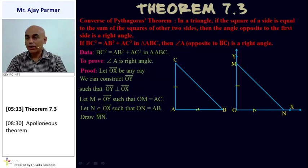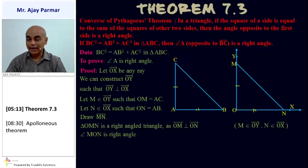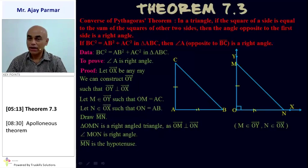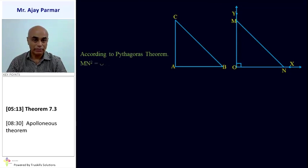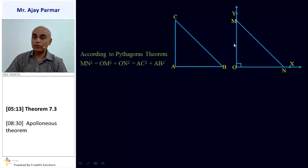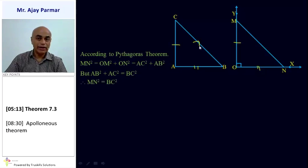We draw line segment MN. In triangle OMN, angle O is obviously a right angle since OM is perpendicular to ON, making triangle MON a right-angled triangle. Since angle O is a right angle, line segment MN is the hypotenuse. By Pythagoras theorem: MN² = OM² + ON². But OM² = AC² and ON² = AB², and we know AC² + AB² = BC². Therefore MN² = BC², which means MN = BC.